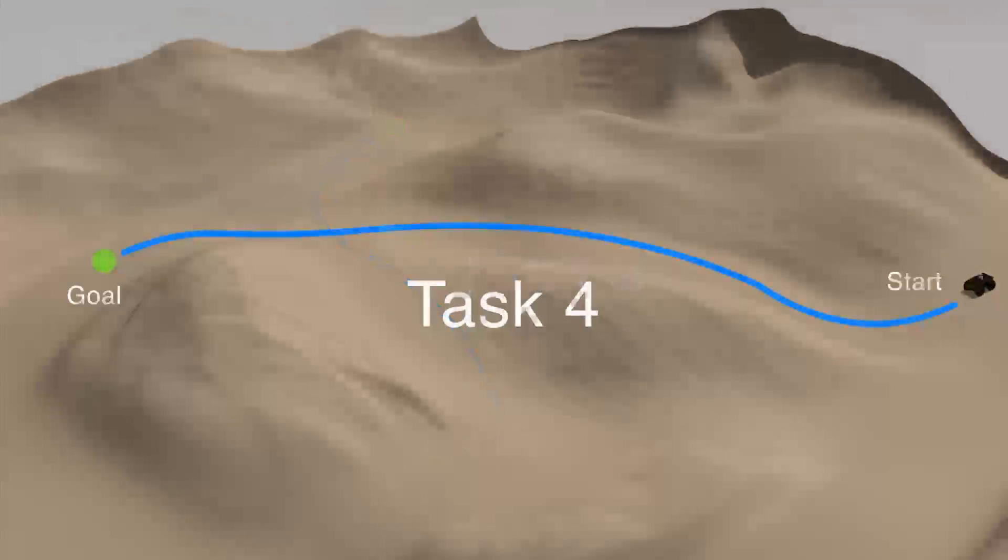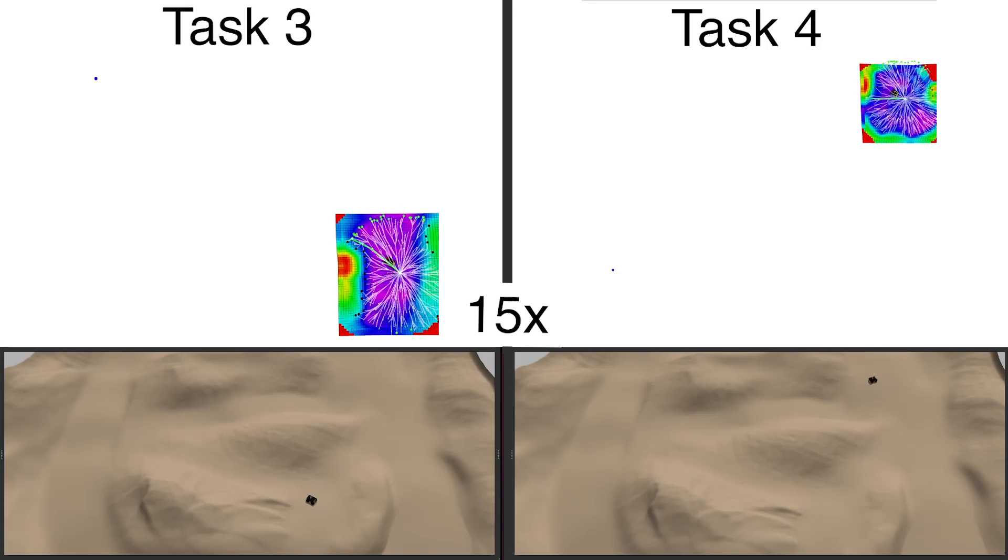In Task 3 and Task 4, we test our algorithm using Ground Truth localization.